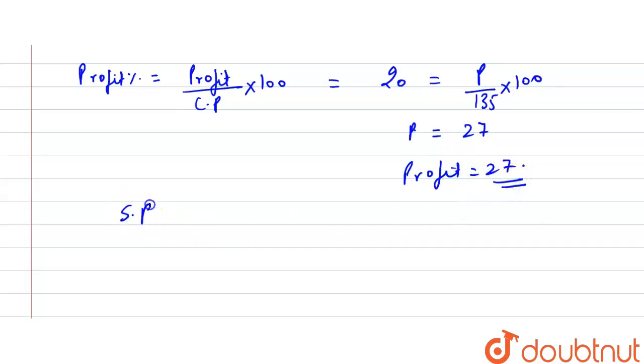Now selling price is equal to cost price plus profit. So 135 plus 27 profit equals 162. So the total selling price for 45 dozen bananas is Rs.162.